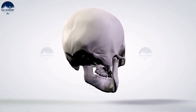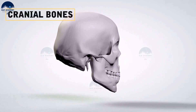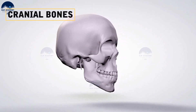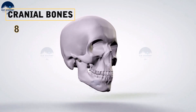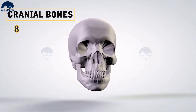Cranial bones are 8 in number. They form a hard protective outer covering called the cranium for the brain.